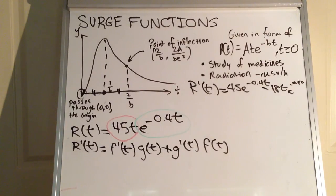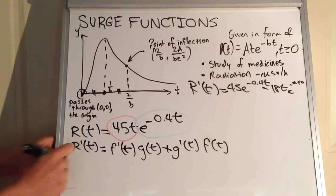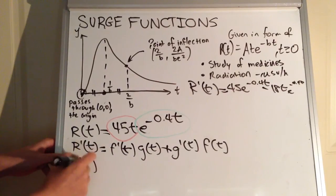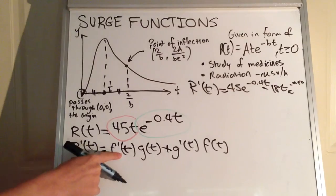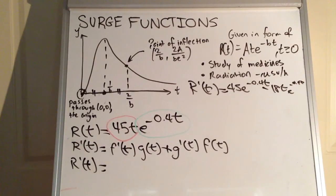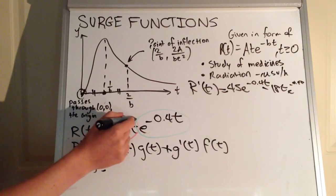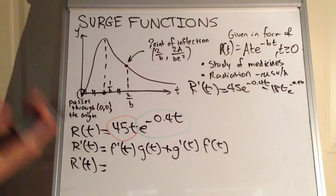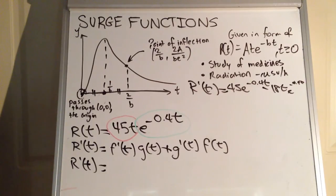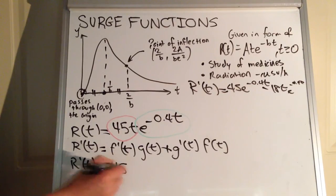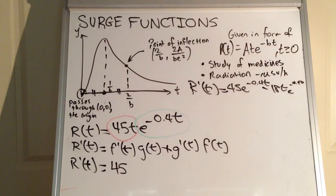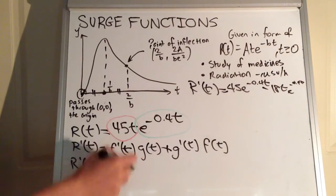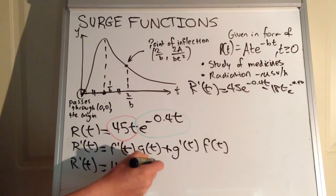So if we go ahead and differentiate: the derivative of our first function f'(t) — it's 45t — and whenever there's a coefficient and a pronumeral, the derivative is just that coefficient. Because that's t to the power of 1, subtracting 1 from the exponent gives t to the 0, which is 1. So it's just 45 times 1, which is 45. Then we write the second term as is: 45·e to the power of negative 0.4t.